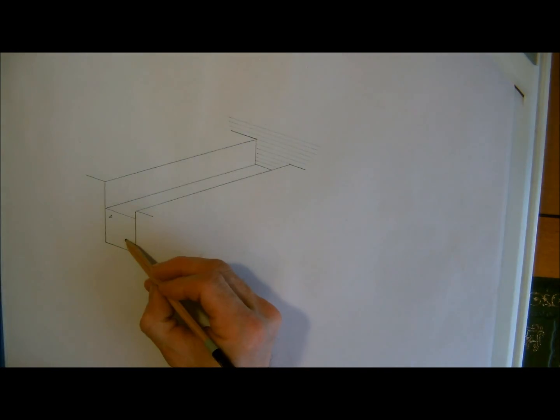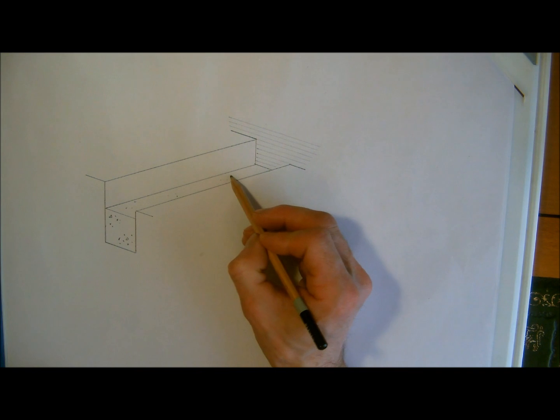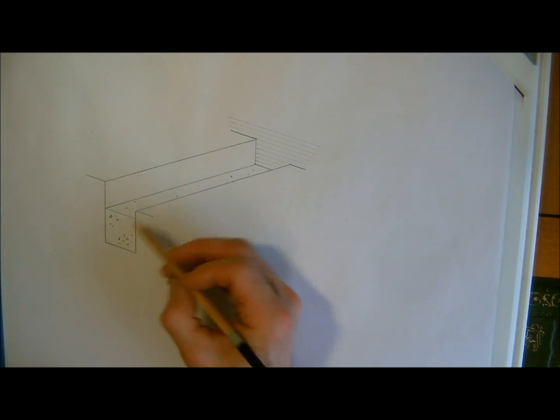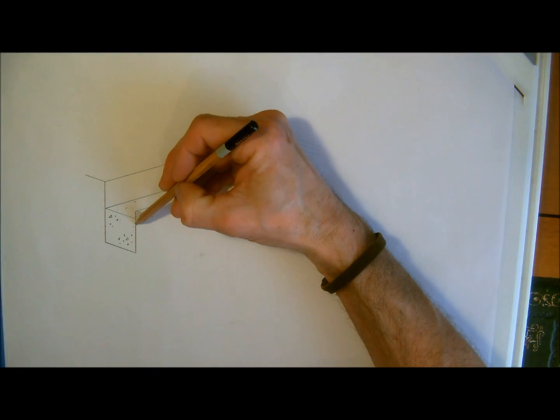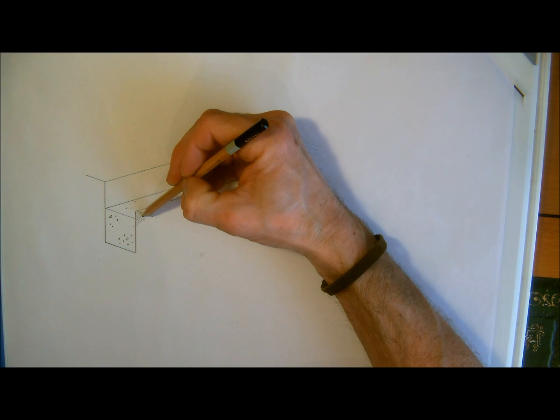Here we have the concrete so if I just do the symbol hatching for concrete and just a few little dots on top representing the aggregate. And what we do for soil is like four lines going that way and then a series of lines going this way.